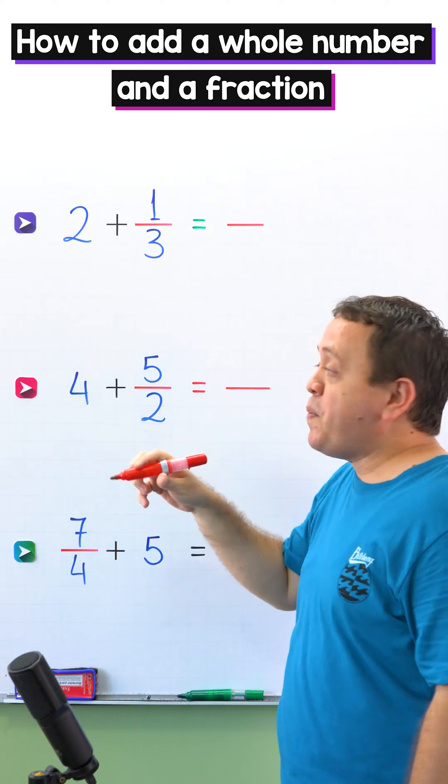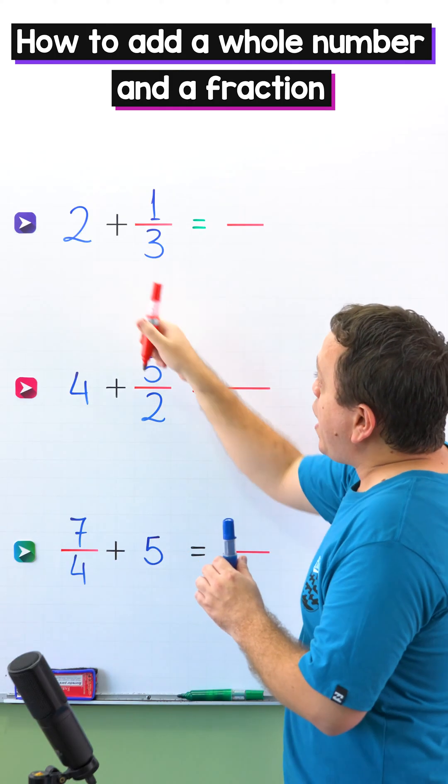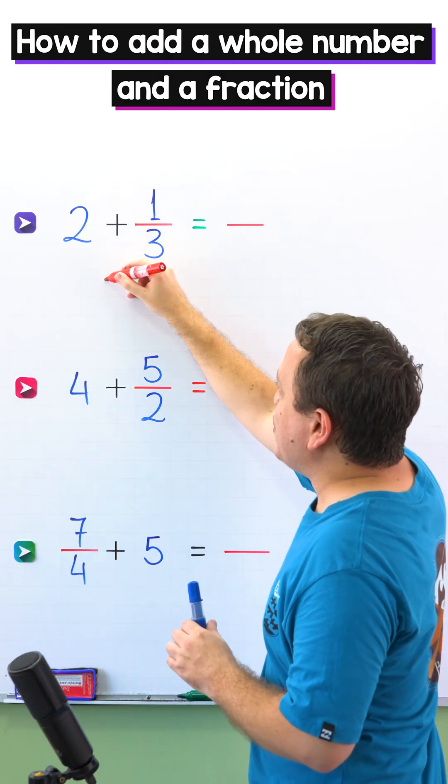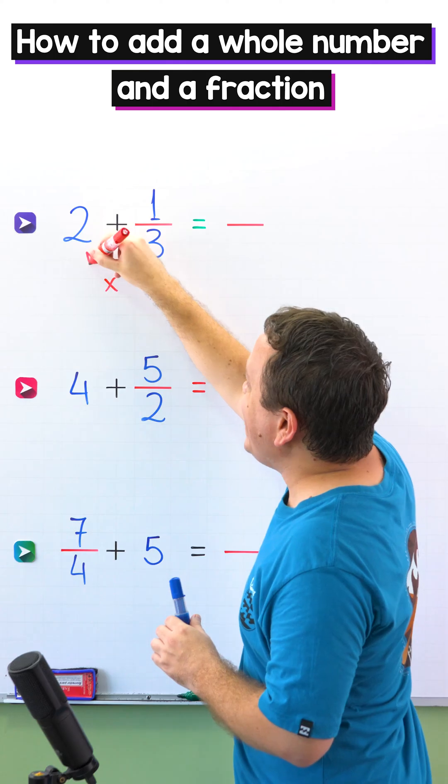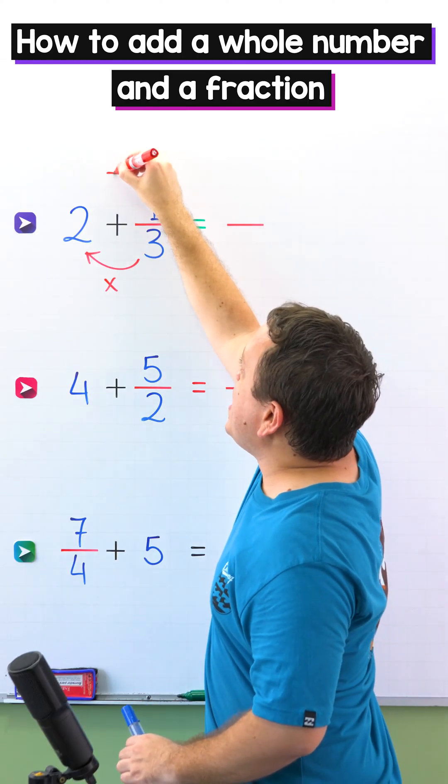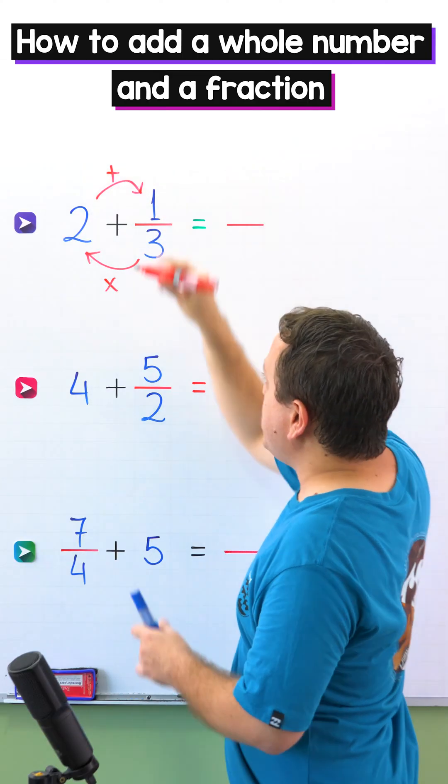In the first example, we're going to add 2 plus 1/3. To add a whole number and a fraction first, we multiply the denominator by the whole number. Then we add this result to the numerator. Here we go!